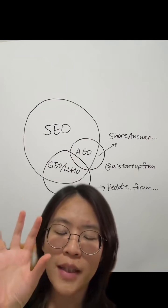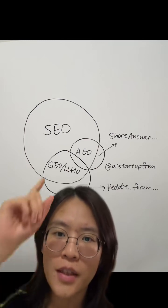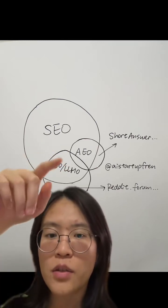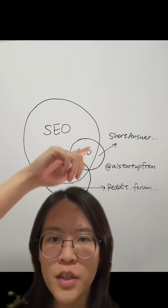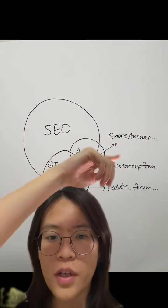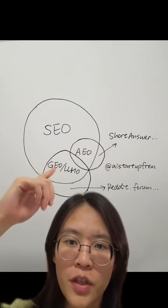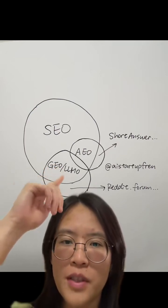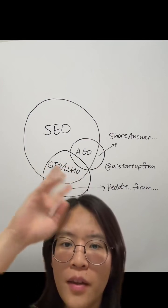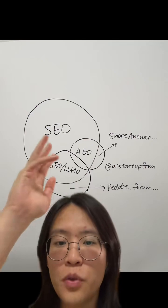AEO is answer engine optimization, which is basically making your product show up directly in AI overviews or ChatGPT as the answer — instead of SEO where people still need to click your link. Most of it overlaps with SEO, but the extra thing is you've got to give good, short answers to answer people's questions directly. GEO — generative engine optimization — and LMO — large language model optimization — are pretty much the same: tips and tricks for you to be easily consumed by LLMs.